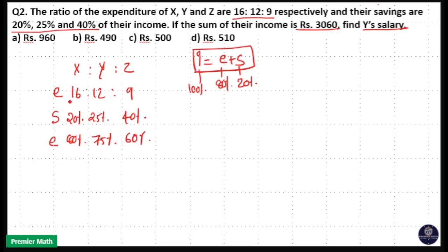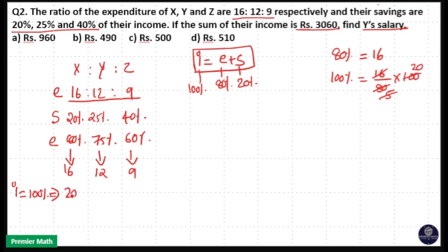Here we know expenditure is in the ratio 16 is to 12 is to 9. That means 80% is equal to 16, 75% is equal to 12 and 60% is equal to 9. Here income is 100%. That means if 80% is equal to 16, then 100% will be 16 by 80 into 100. 16 into 5 is equal to 80, so X's salary will be 20 parts because 100% is equal to 20 parts.